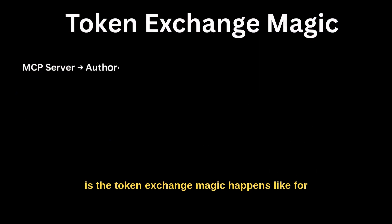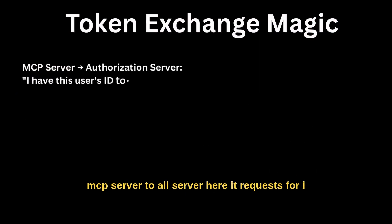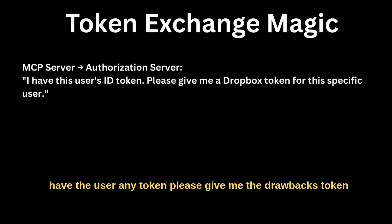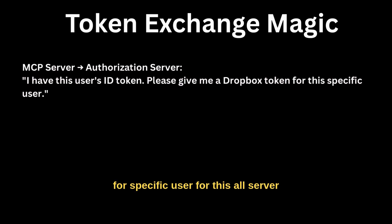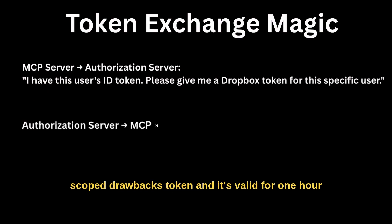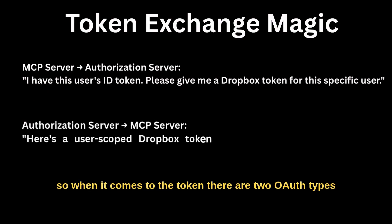Here is how the token exchange magic works. From MCP server to auth server, it requests: 'I have the user ID token — please give me the Dropbox token for this specific user.' The auth server responds to the MCP server: 'Here is the user-scoped Dropbox token, and it is valid for one hour.'